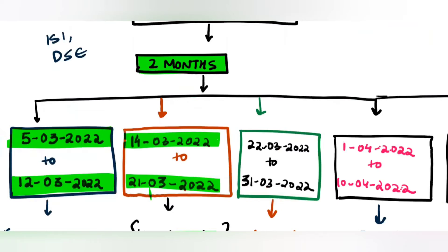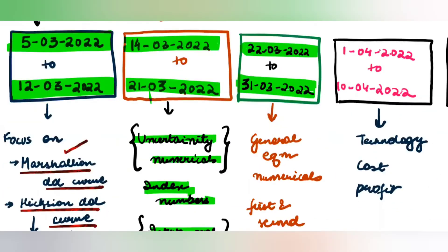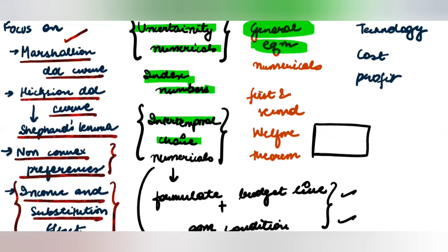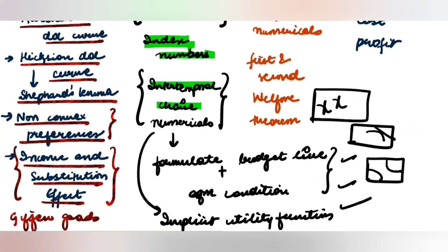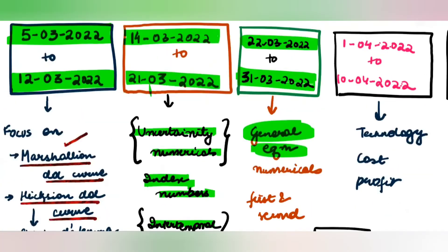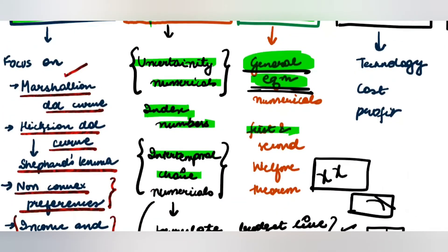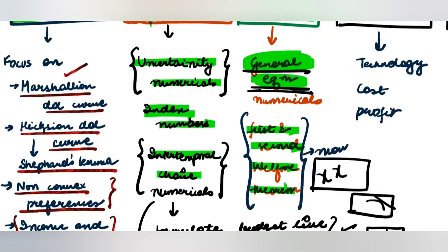Then from 22nd of March to 31st of March, we will do questions on general equilibrium and revise as many questions as possible. Within the Edgeworth box, we'll cover cases like both convex preferences, one substitute good with convex preferences, both concave preferences, and complementary goods with concave preferences. We would also be focusing on the 1st and 2nd welfare theorems and how the welfare theorem applies under the case of monopoly.